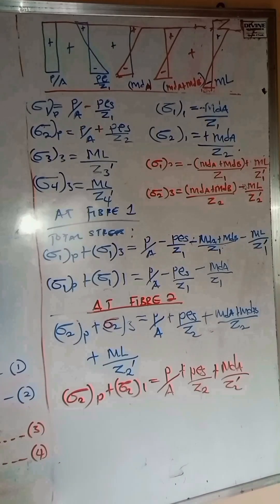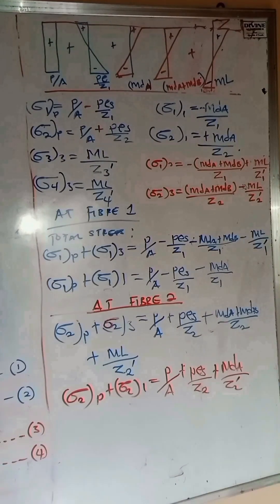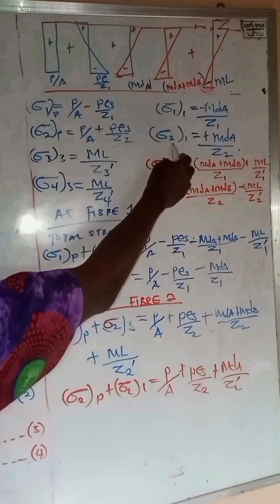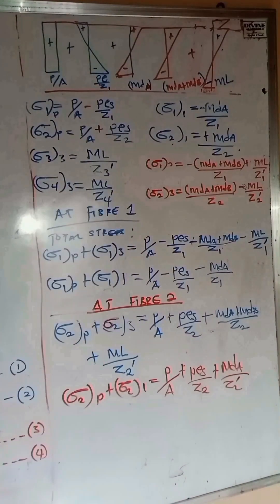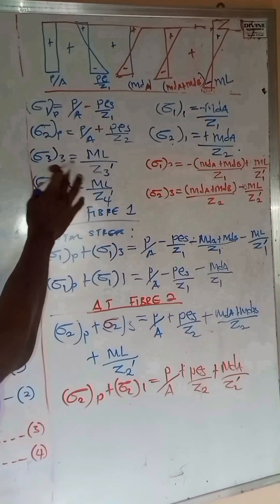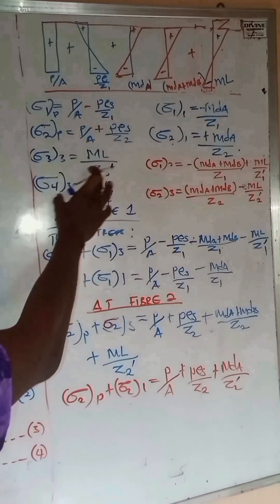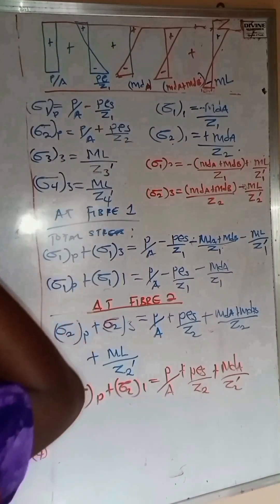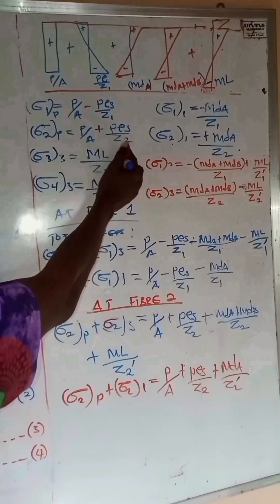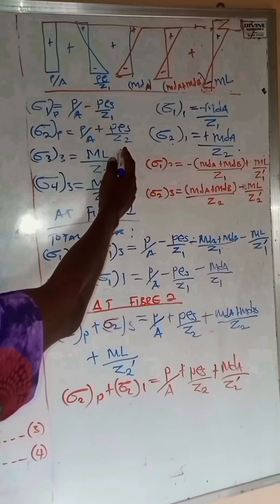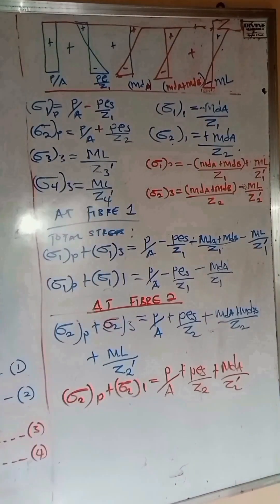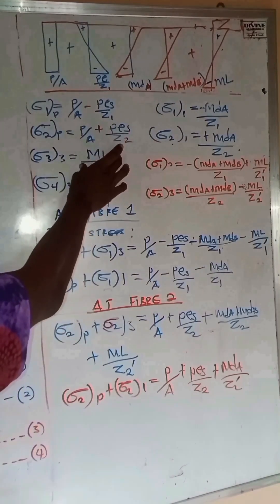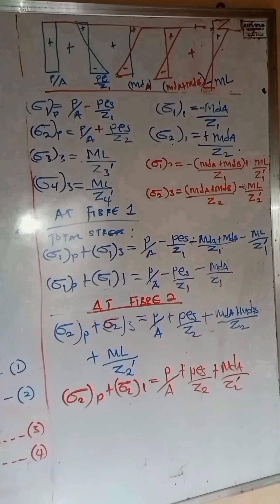The subscript one represents load combination one; the other subscript represents the fiber. For fiber number three, going back to the diagram, the in-situ slab is not present at that level — only the precast section is below it — so we are not going to consider the in-situ slab contribution. Therefore, the bending stress at fiber three only considers bending due to the imposed live load.